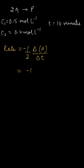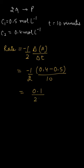that is the time interval. So that would be minus half times the final concentration, which is 0.4, minus the initial concentration, which is 0.5, and the time taken is 10 minutes. This comes out to be 0.1 divided by 20,